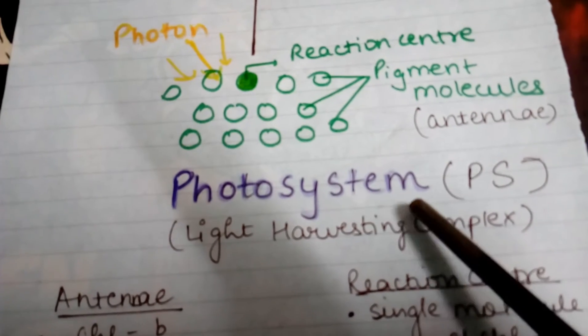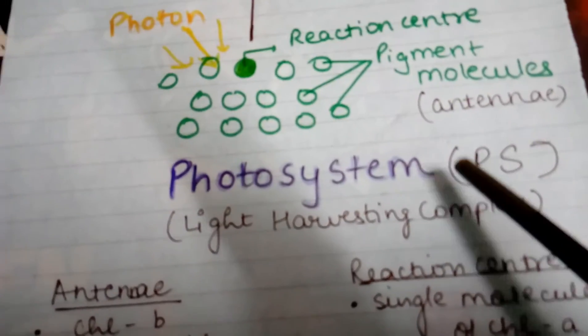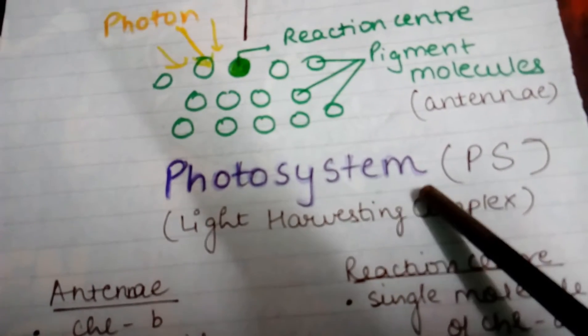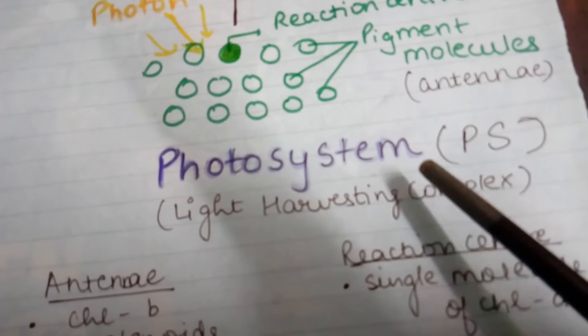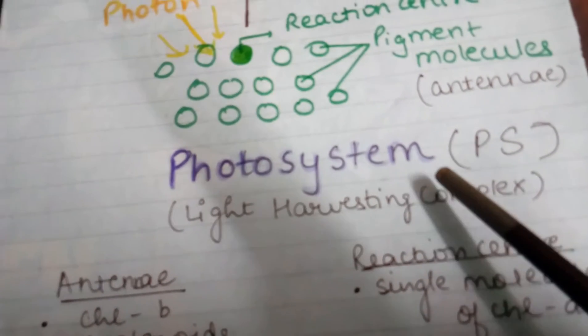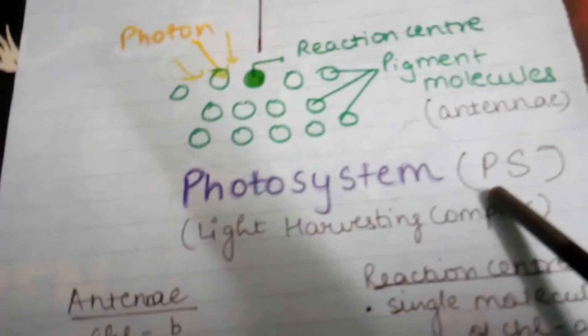Where are these photosystems present? In the thylakoid membrane and stroma lamellae, which are structures found within chloroplasts. We'll save another video for the detailed structure of chloroplasts.